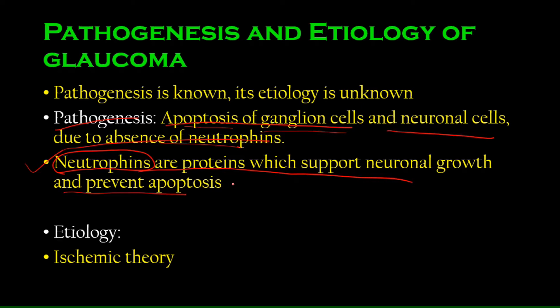The moment you cut off the supply of neurotrophins from a nerve cell, it will undergo apoptosis. How does increased intraocular pressure cause a lack of neurotrophins? Well, that is not fully confirmed — there are certain theories, the most impressive of which is the ischemic theory. Let's talk about that — it's really interesting.